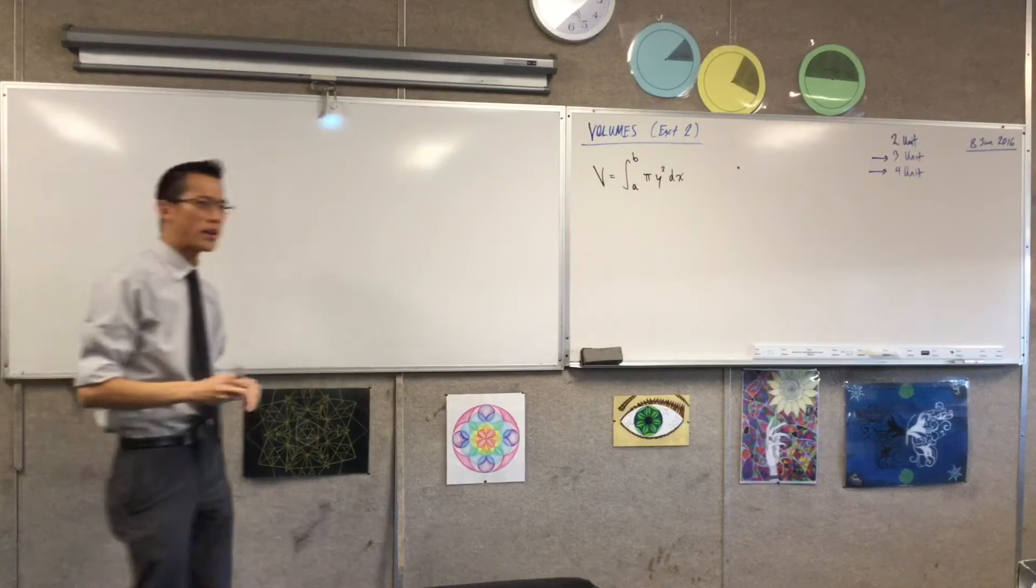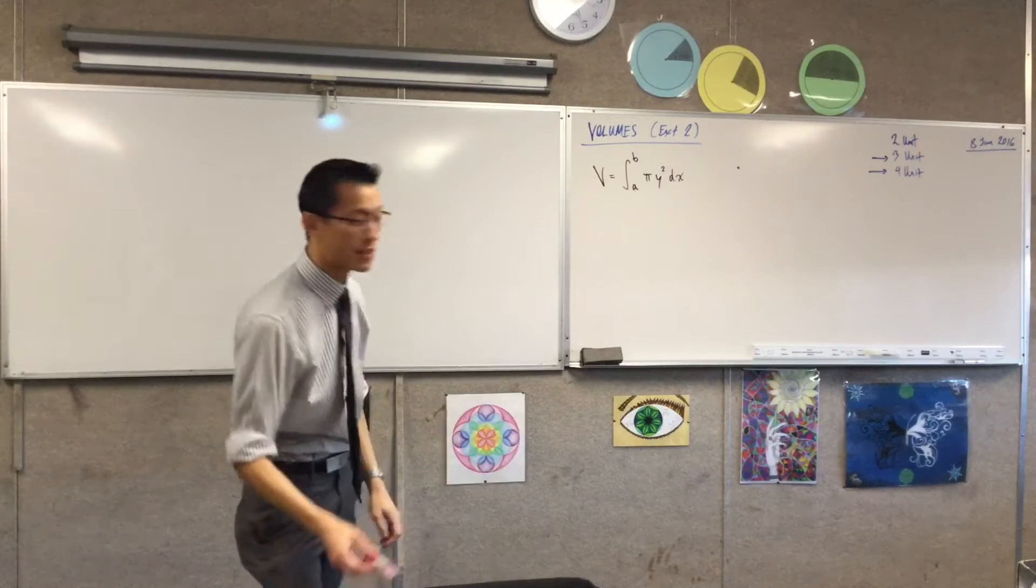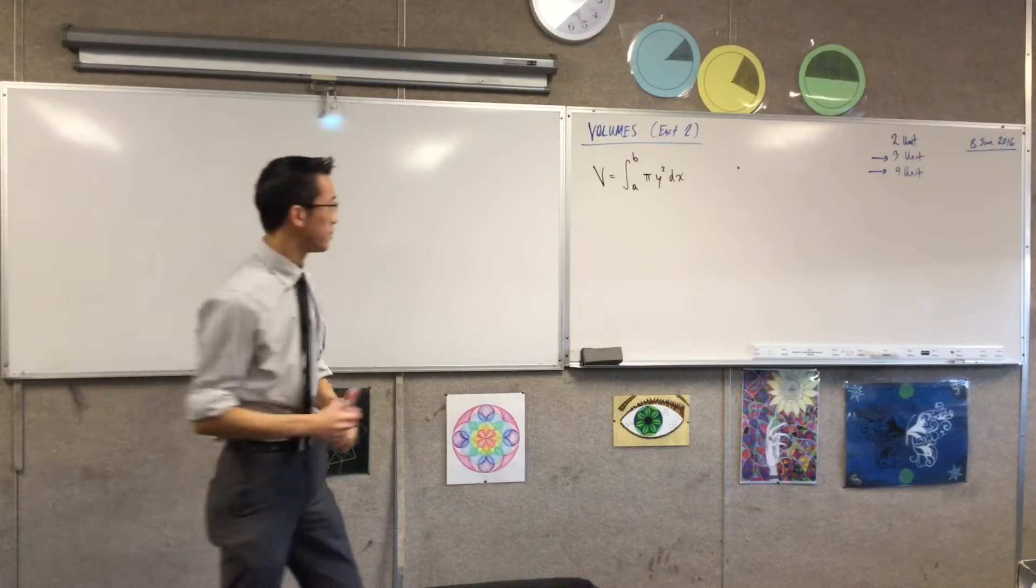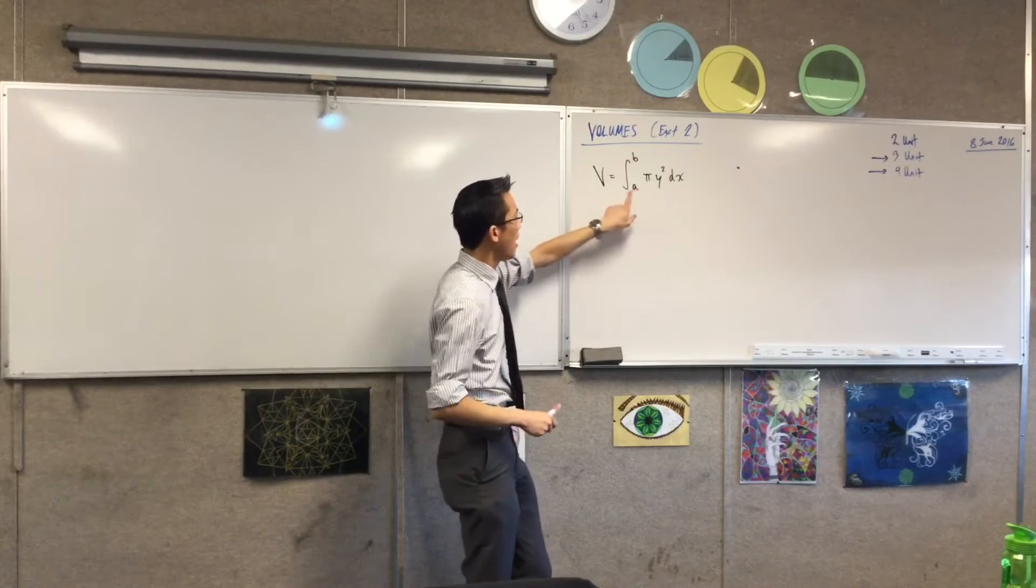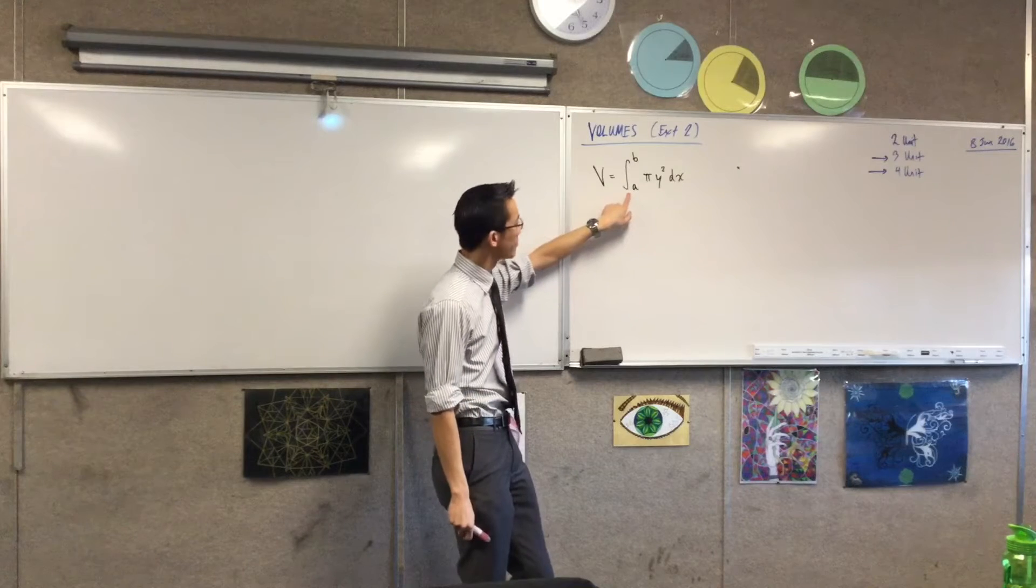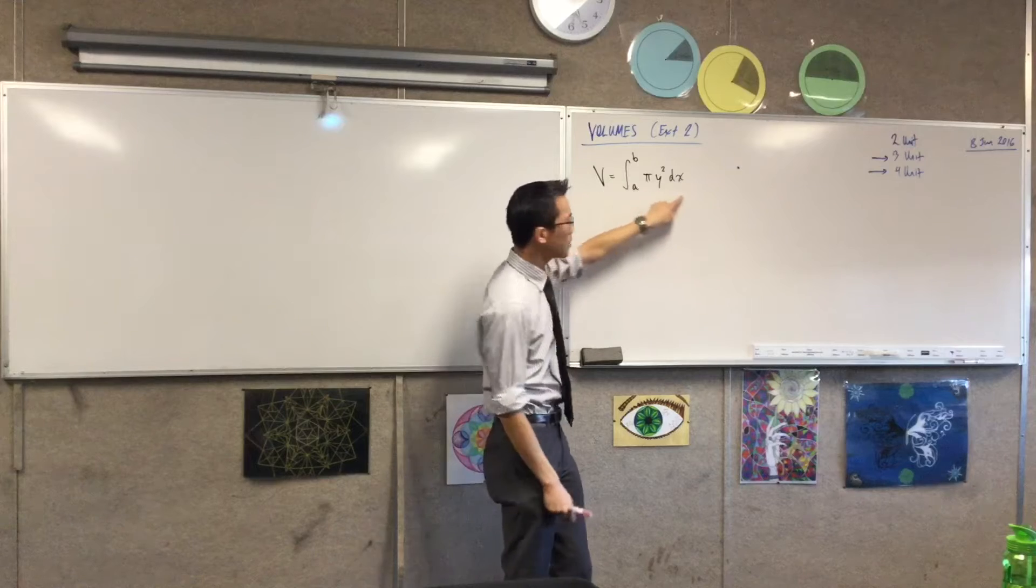So, excuse me. What does this mean? What we're doing, and here's the first place that I'm going to dig a little bit deeper. What we're doing is we are considering the sum of a number of infinitely small, what kind of shape is this?